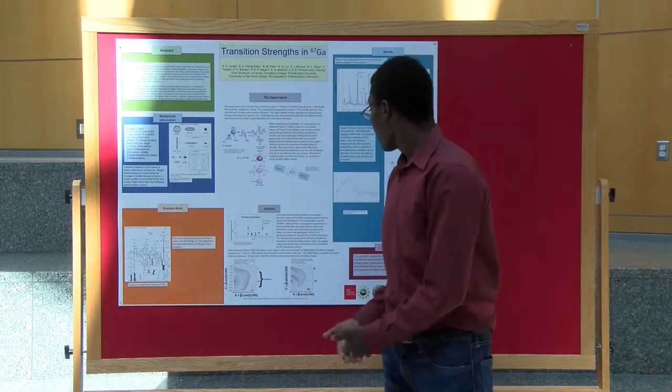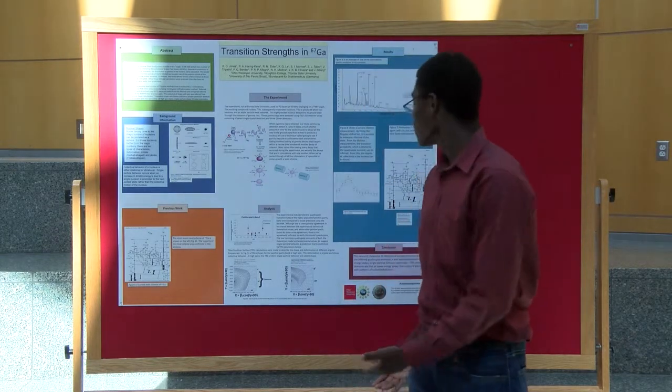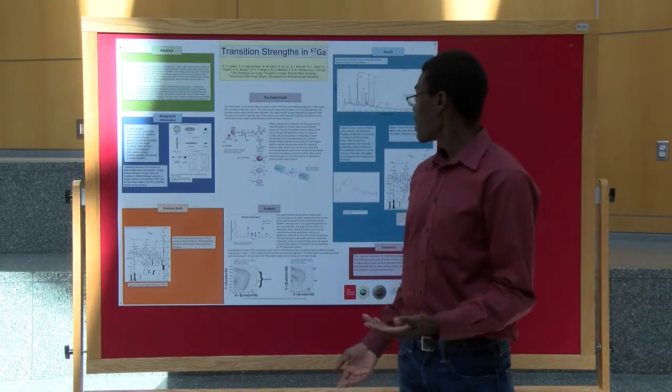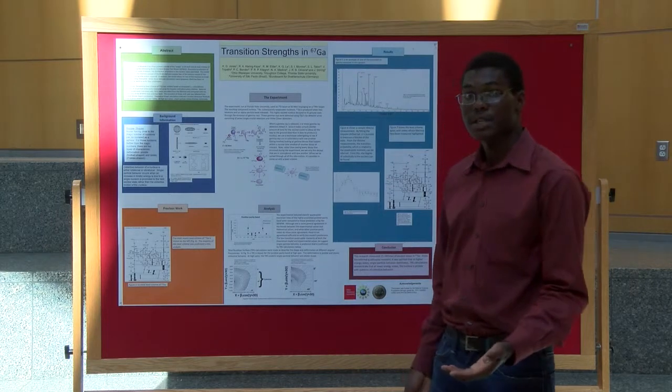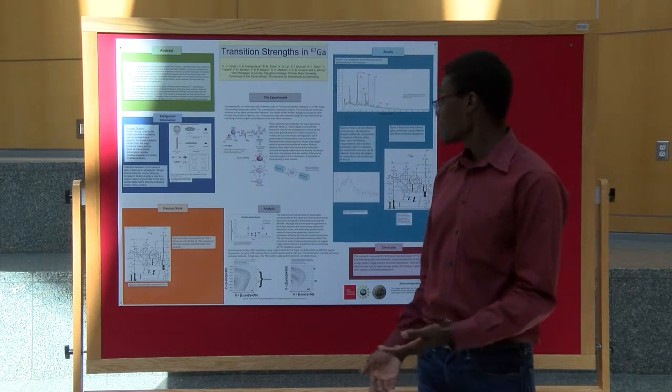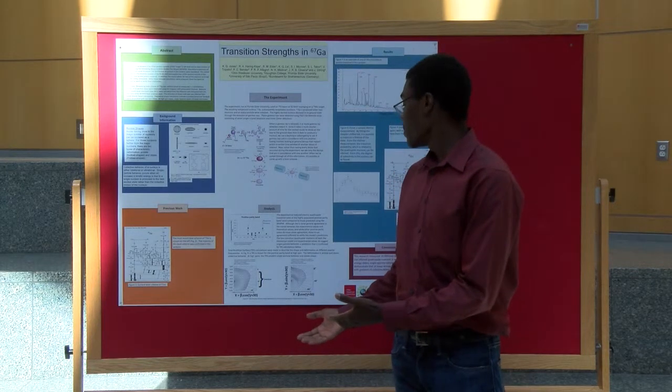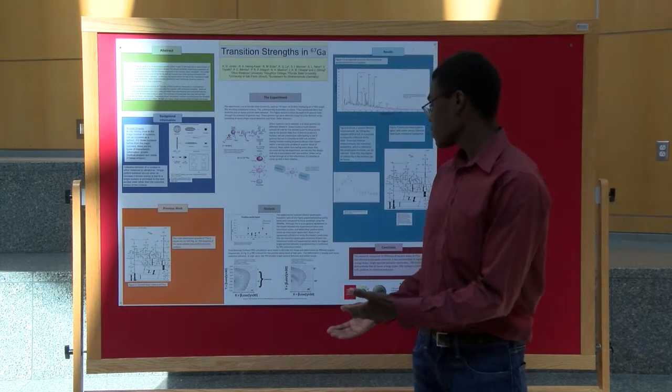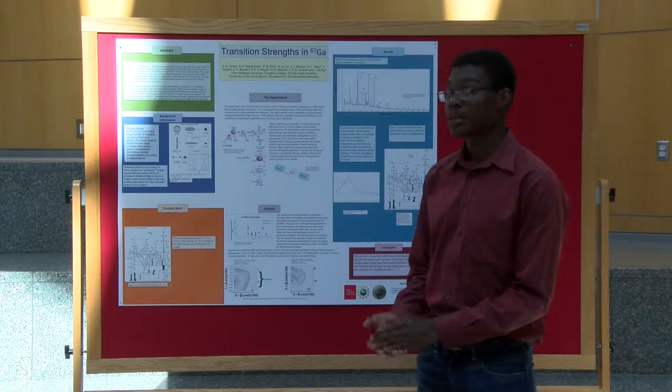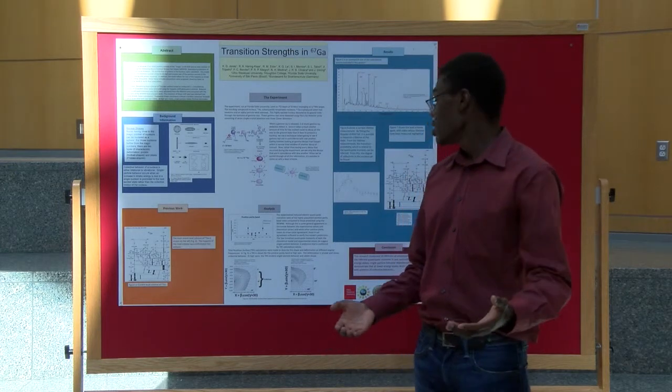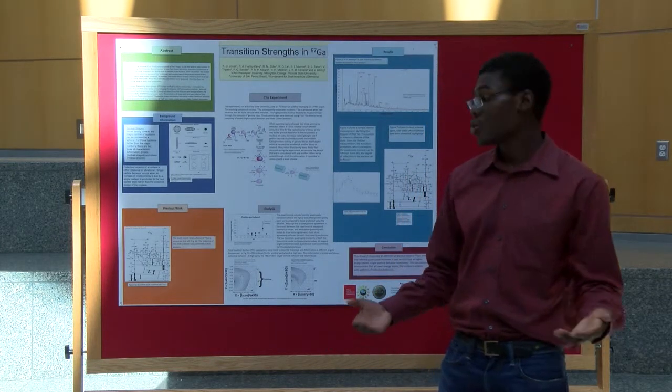In conclusion, over the summer I've measured 13 different lifetimes in gallium 67. We found that gallium 67 does change its shape from being prolate and collective behavior at low spins to having single particle behavior in oblate at high spins.